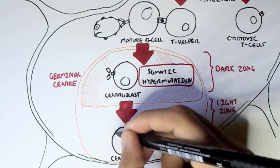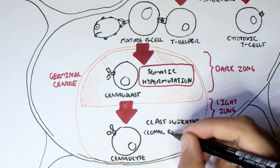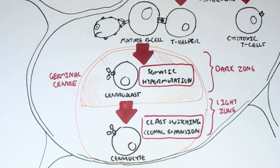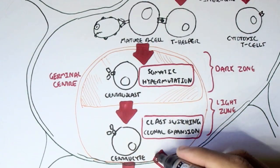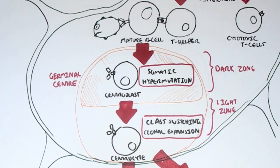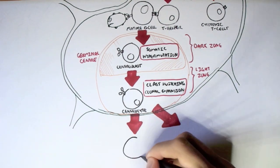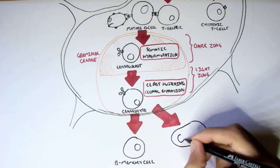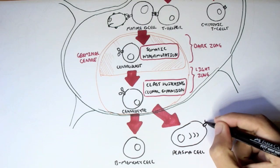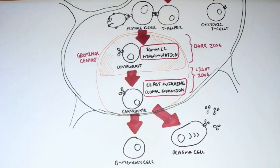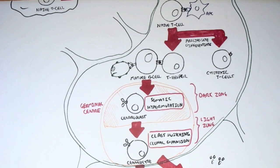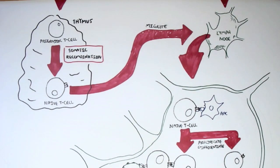The centroblast from the dark zone will then move into the light zone, where it becomes a centrocyte. Here in the light zone it can undergo class switching and clonal expansion, where it will differentiate and proliferate into either memory B-cells or plasma cells — the antibody-secreting cells. Class switching involves the immunoglobulin, usually IgM, becoming IgE, IgA, etc. This all occurs in the germinal center.